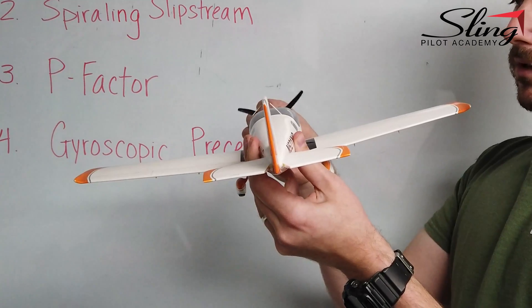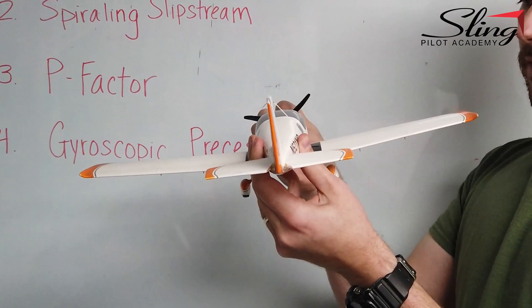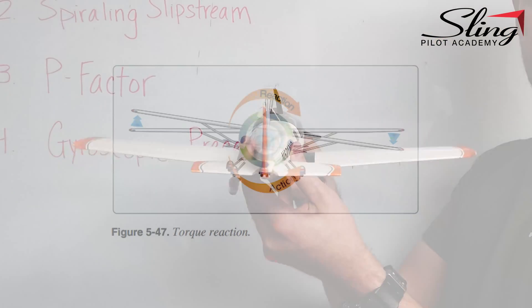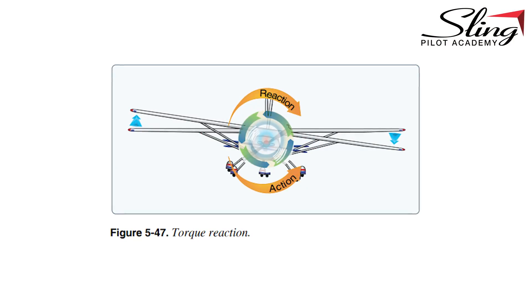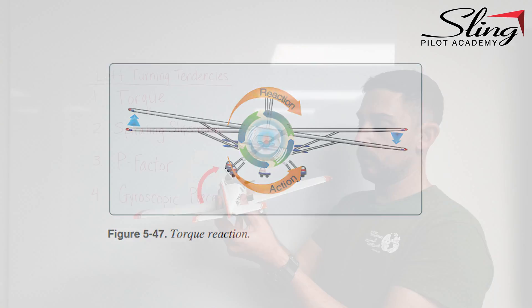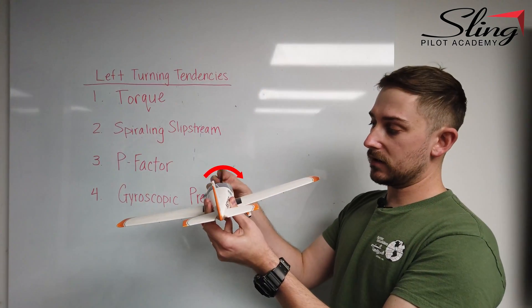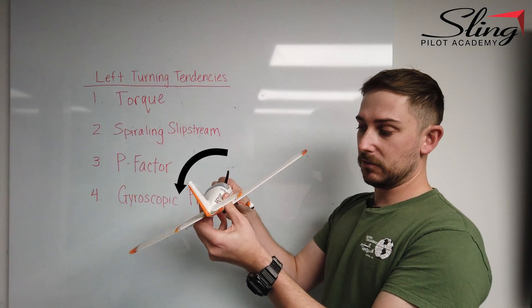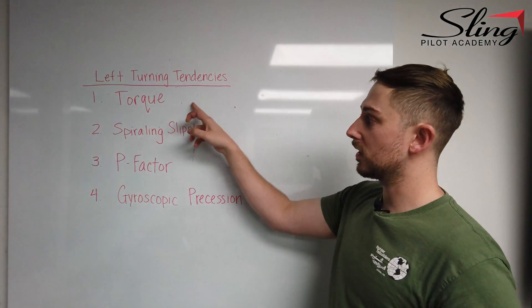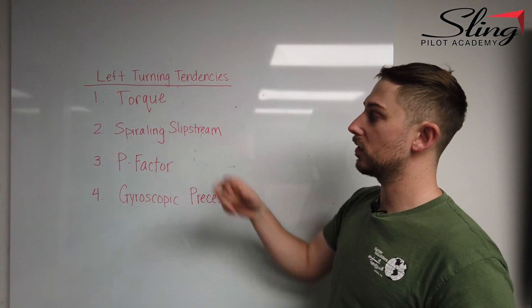So because of this clockwise turn, we have a counterclockwise turn of the aircraft. This is the equal and opposite reaction working together — right turn of the prop, left turn with the plane. That's the effect of torque.